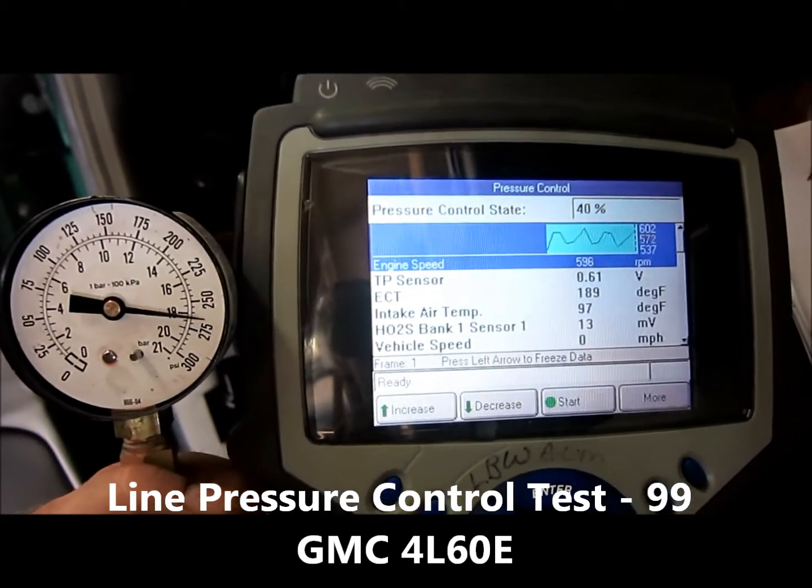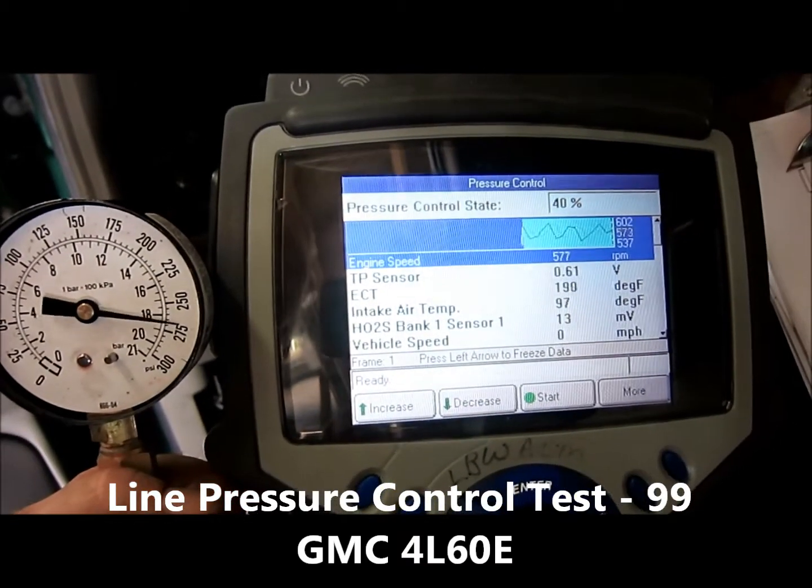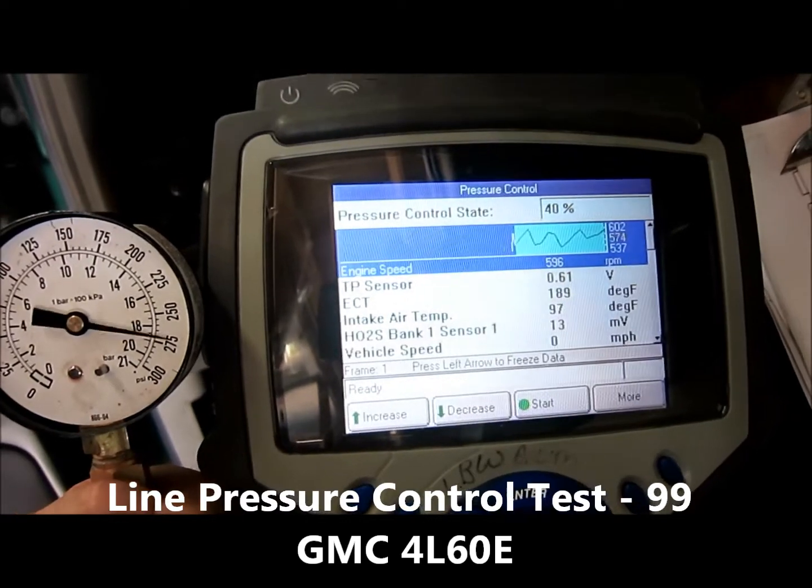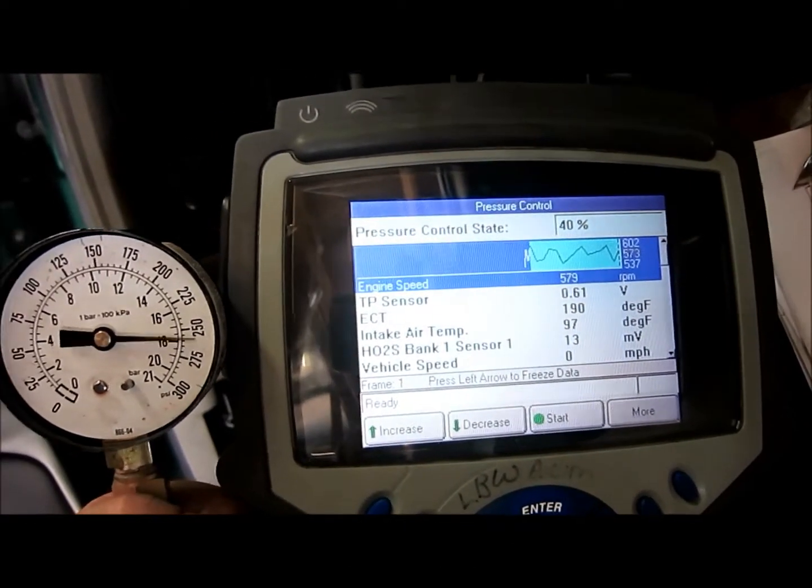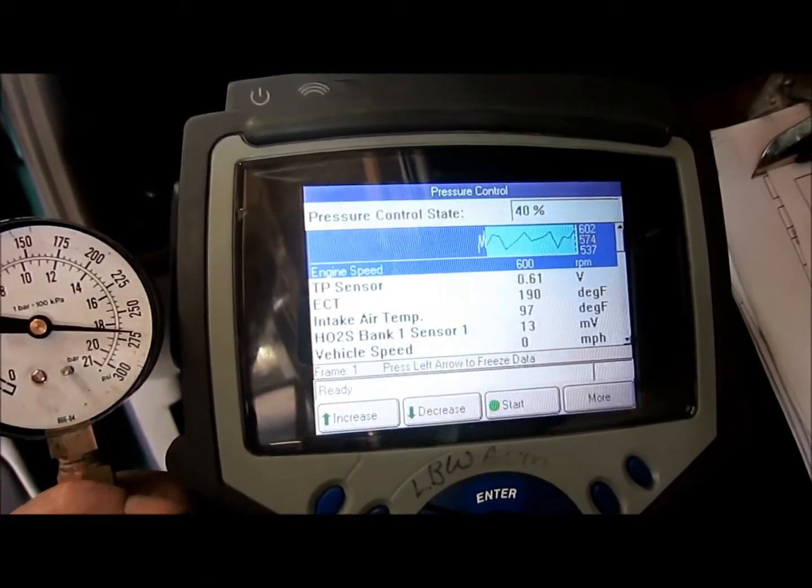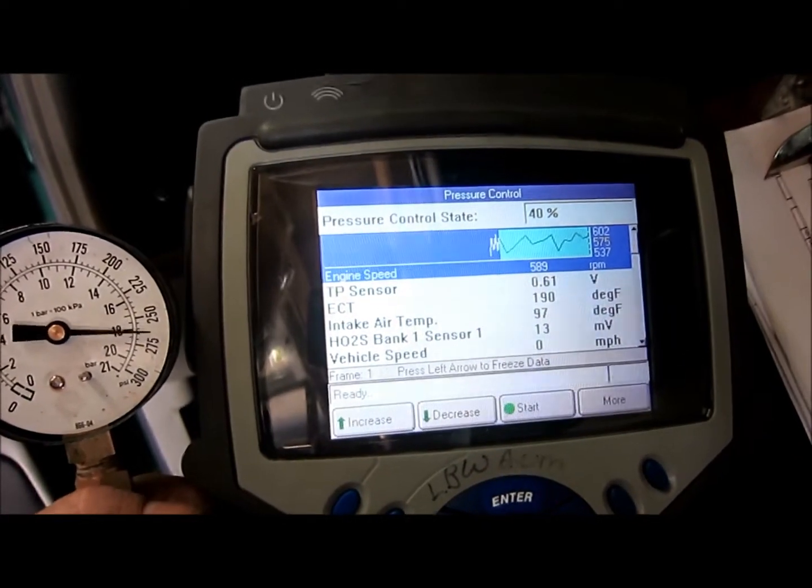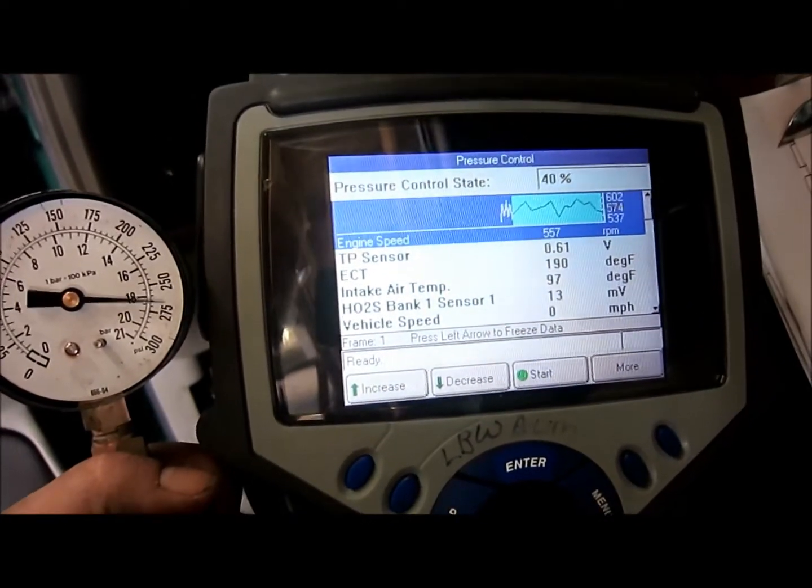Okay, we got this GMC Sierra idling and we got our scan tool hooked up and we can actually control the pressure control solenoid with our scan tool here because it's got two-way communications with the PCM and what we're going to do is we're going to increase the pressure control state and which way is our actual pressure going to go?